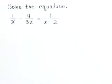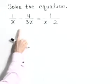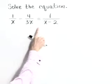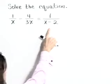Solve the equation: 1 over x minus 4 over 3x is equal to 1 over x minus 2.